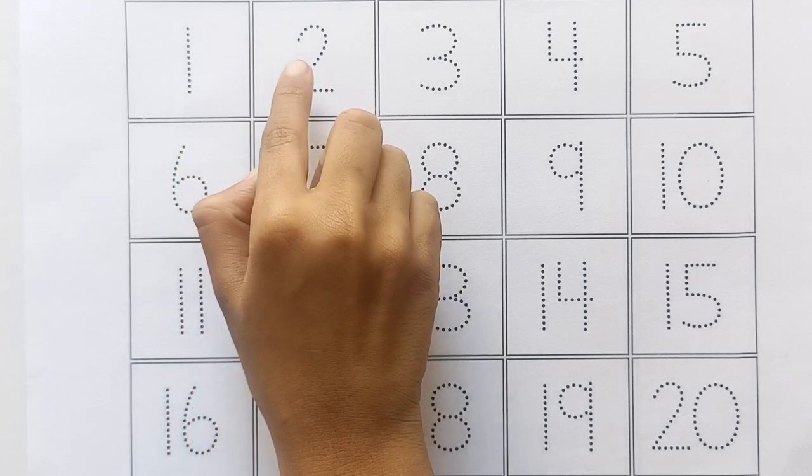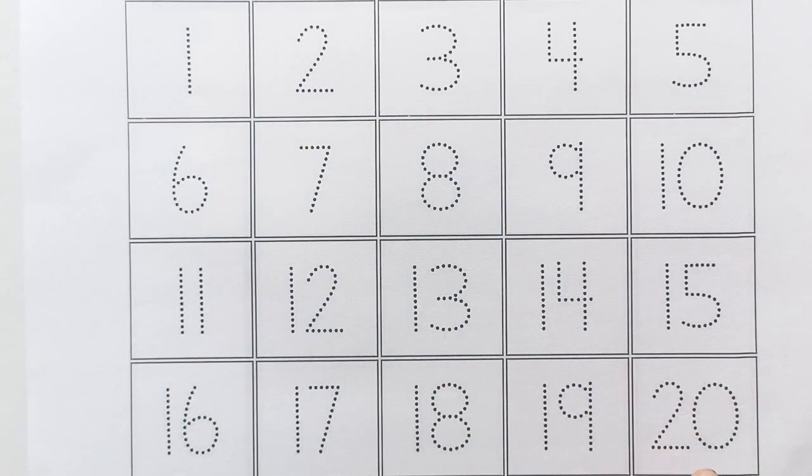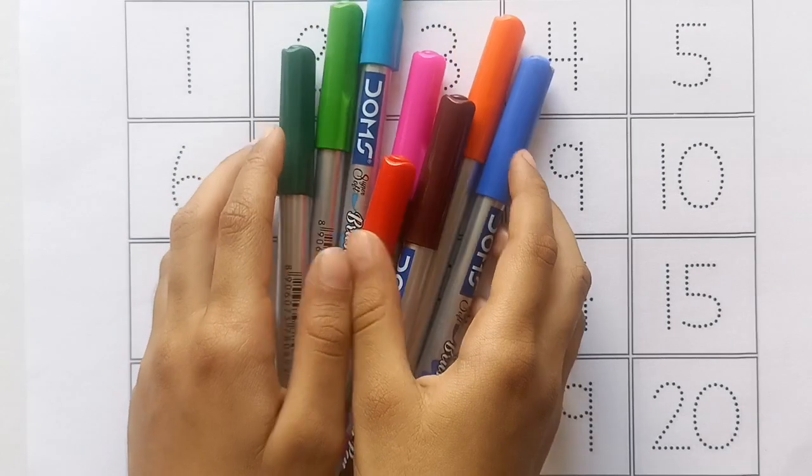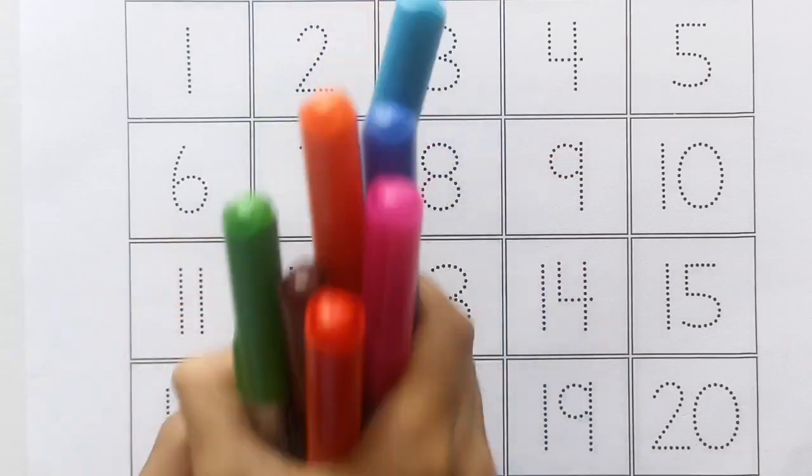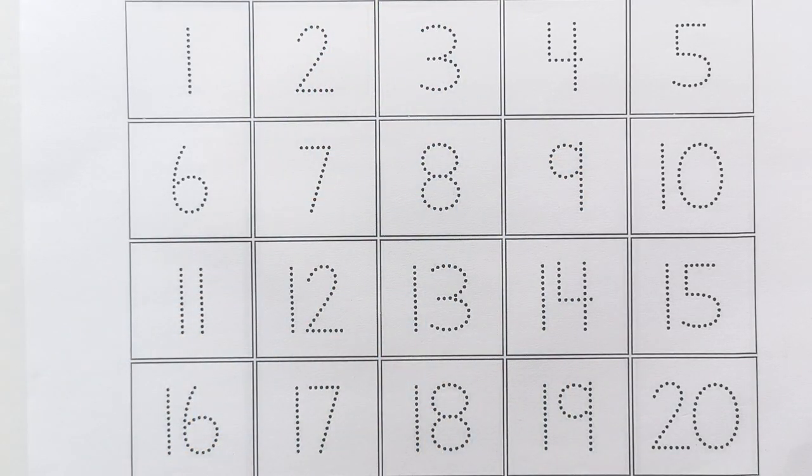One to twenty tracing number with colors. Let's start now with tracing colors.